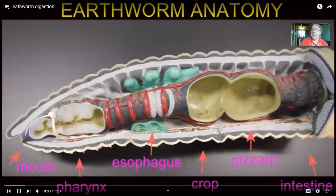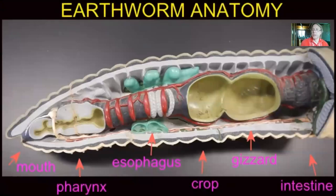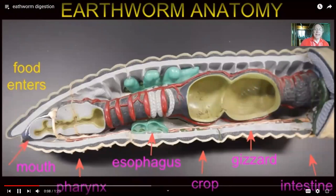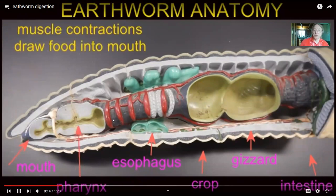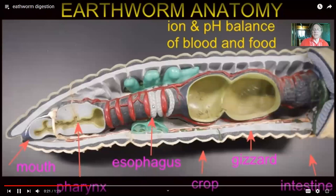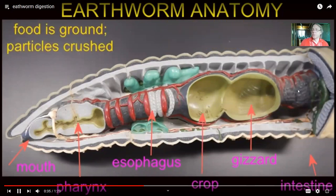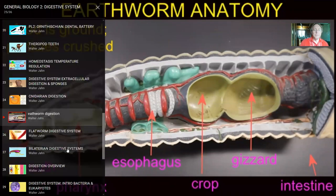Cnidarians have tissues but not organs. It was in the bilaterians — the worms — that true organs evolved, giving rise to a gastrointestinal tract with different specialized regions. In the earthworm, for example, the muscular pharynx creates suction, the esophagus adjusts pH for the enzymes, and the crop and gizzard grind the ingested material. Chemical digestion then begins in the intestine. Different regions of the gastrointestinal tract can be specialized.